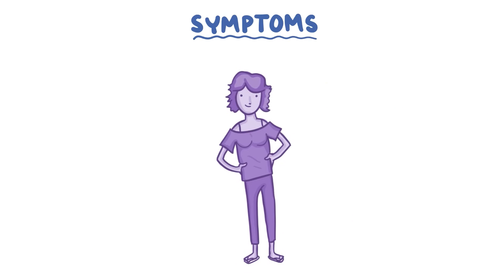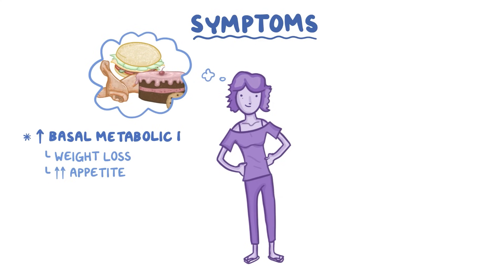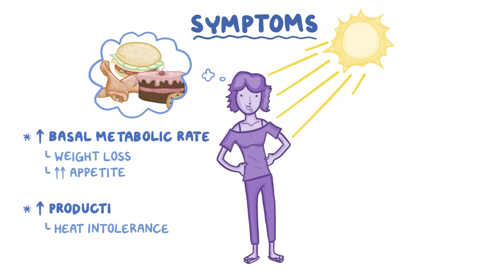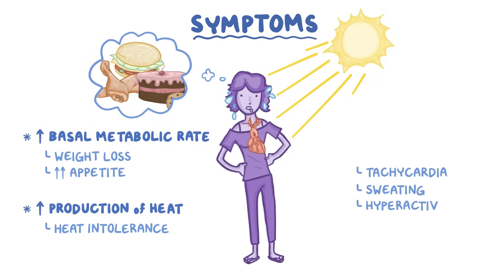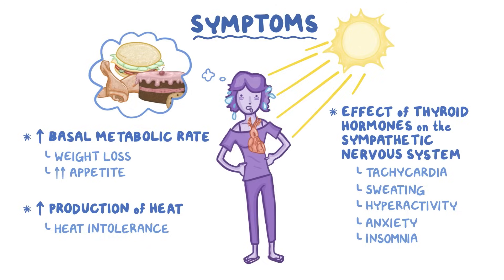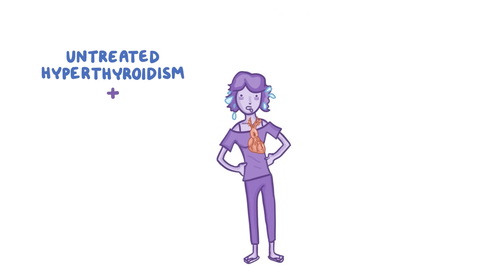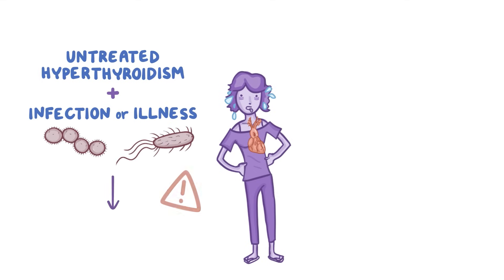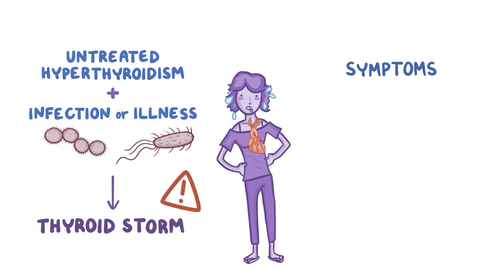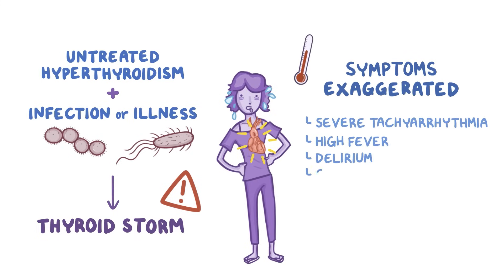The symptoms of hyperthyroidism include weight loss despite an increase in appetite because of the higher basal metabolic rate, heat intolerance because the body is producing more heat, and rapid heart rate or tachycardia, sweating, hyperactivity, anxiety, and insomnia because of the effect of thyroid hormones on the sympathetic nervous system. Untreated hyperthyroidism combined with a stressor like an infection or illness can trigger a life-threatening complication called thyroid storm. Many of the symptoms of hyperthyroidism then become exaggerated, leading to severe tachyarrhythmia, high fever, delirium, and coma.